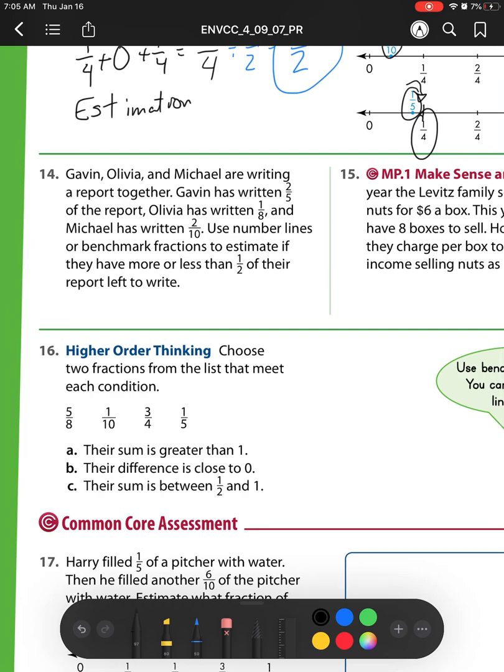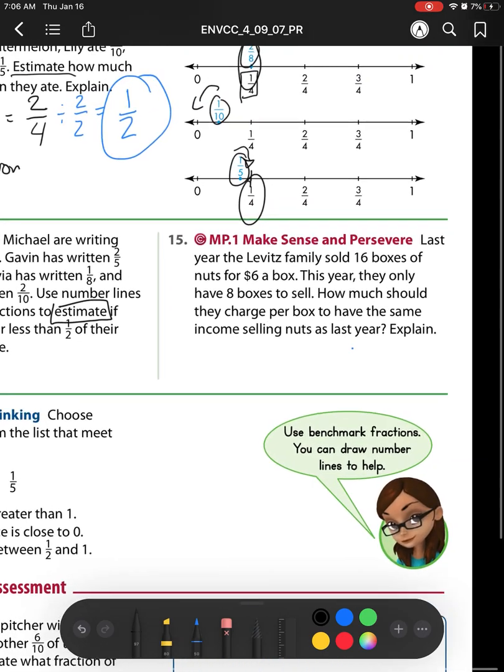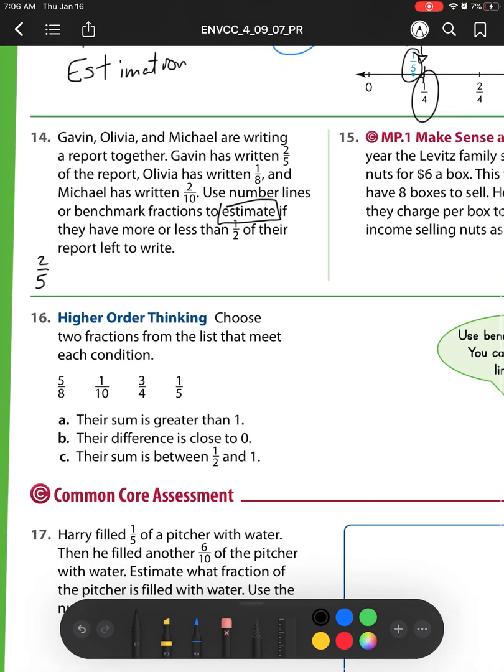For number 14, we have Gavin, Olivia, and Michael are writing a report together. Gavin has written 2 fifths of the report, Olivia has written 1 eighth, and Michael has written 2 tenths. Use number lines or benchmark fractions to estimate if they have more or less than half of their report to write. So what I'm going to do is this 2 fifths—that is close to a half. And if I'm not sure, I can make my number line. So here I was just checking to make sure there was a number line up there with fifths already.